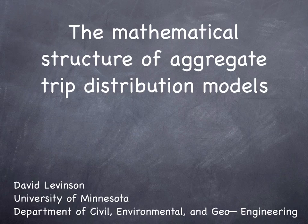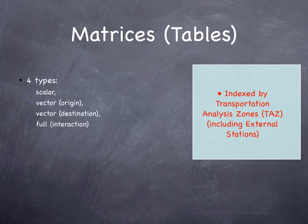There are several data structures that are used in travel demand models. It is useful to keep these in mind as they help us think about how the data fits together. There are four types of matrices: scalars, two types of vectors, and one full matrix.